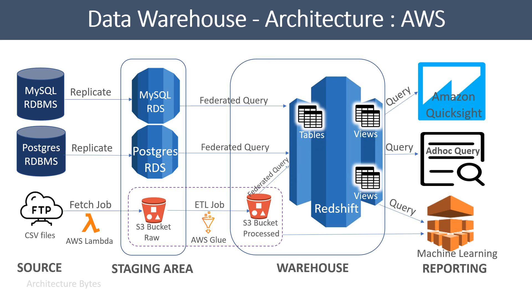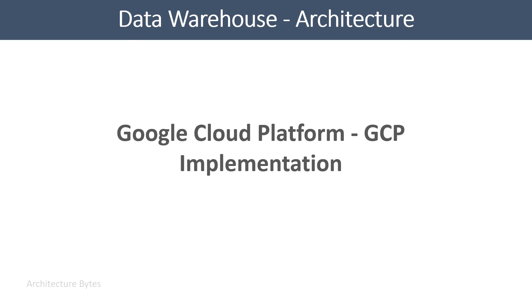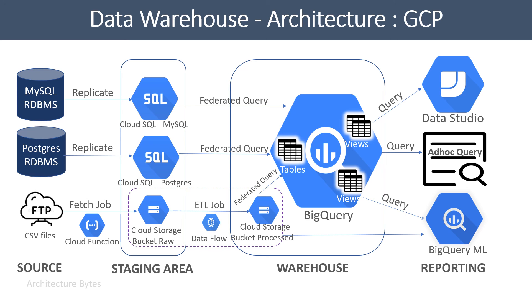This is the overall architecture of our data warehouse on AWS. Now let us see the same data warehouse architecture implemented in Google Cloud Platform. In the staging area, RDS is replaced with Cloud SQL, the S3 bucket is a Cloud Storage bucket, and instead of AWS Lambda, we have a Cloud Function to fetch the CSV files. In the warehouse, Redshift is replaced with BigQuery. This again uses federated queries to extract information from external databases as well as Cloud Storage.